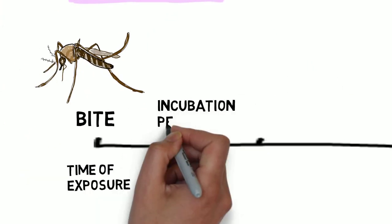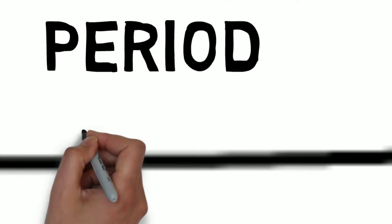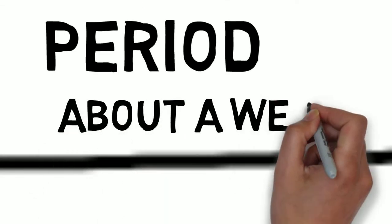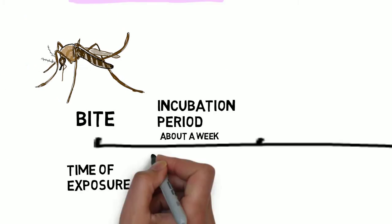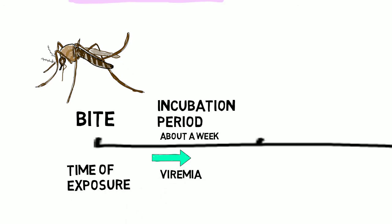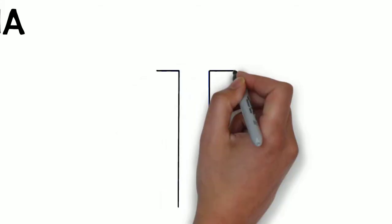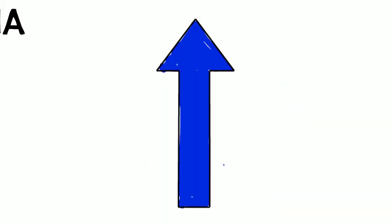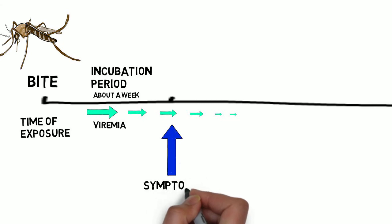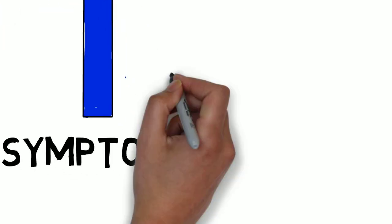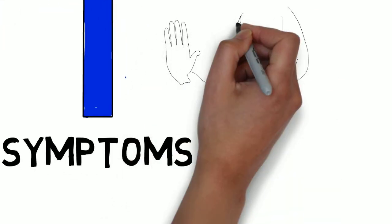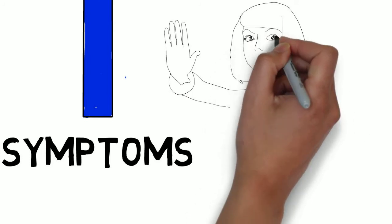After injection comes the incubation period — the interval before symptoms show up. The incubation period is about a week. A study showed 50% of people had detectable virus at one week and 99% at two weeks. The incubation period is about one week and right around that time there is a viremia, which is gone about a week after the illness.